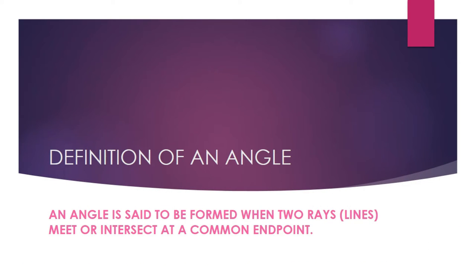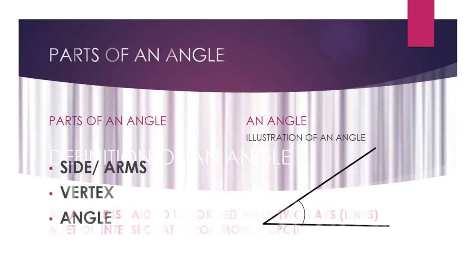What is an angle? An angle is defined as being formed when two rays or lines meet or intersect at a common end point. That's when two lines meet — they form an angle.